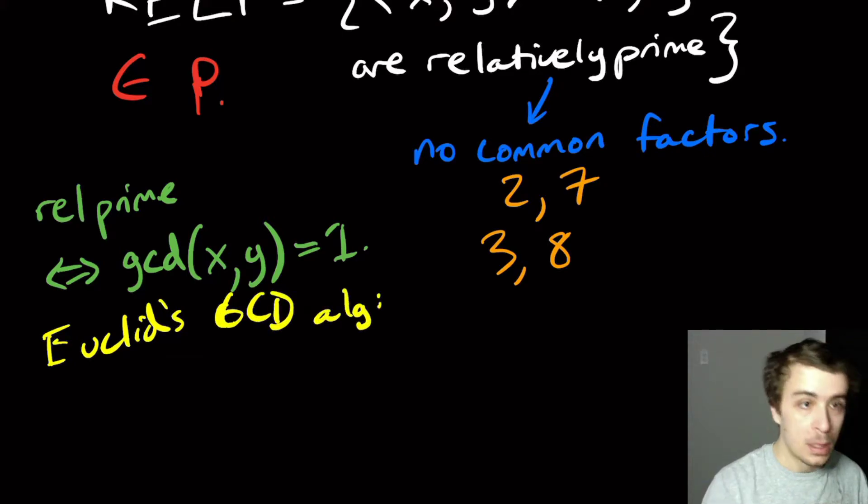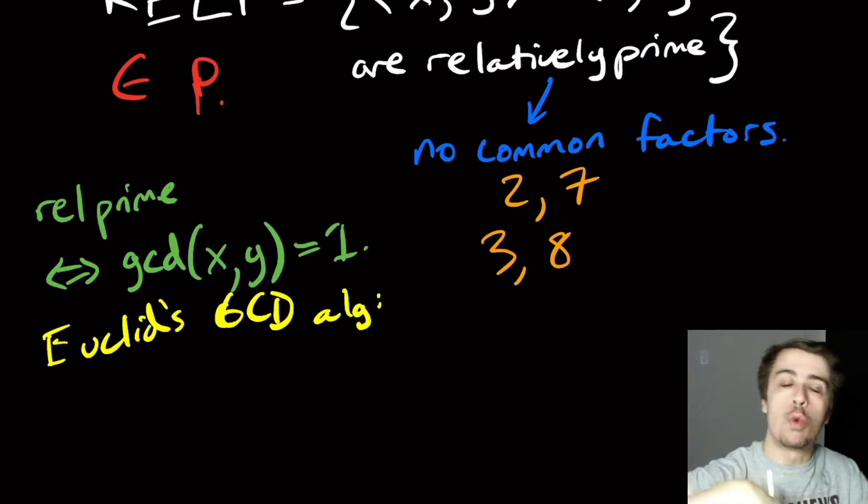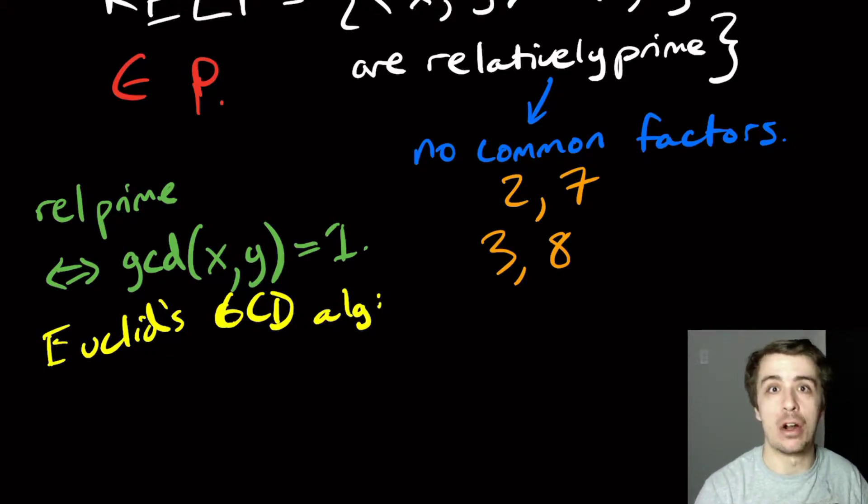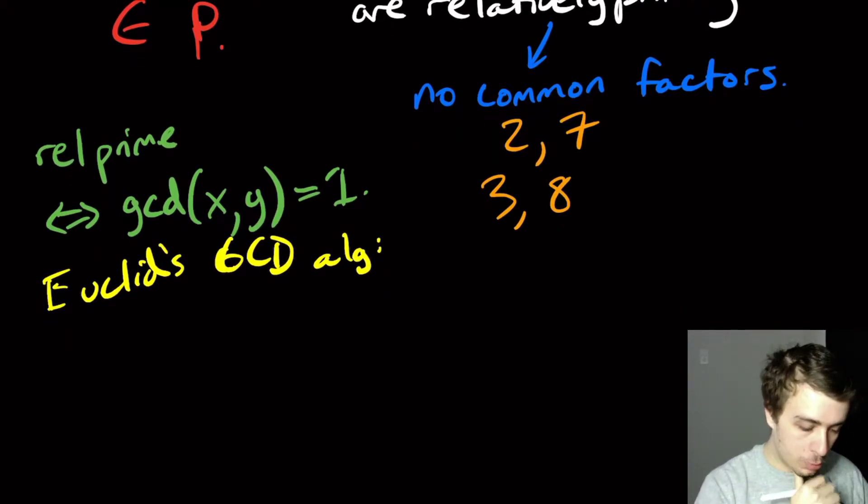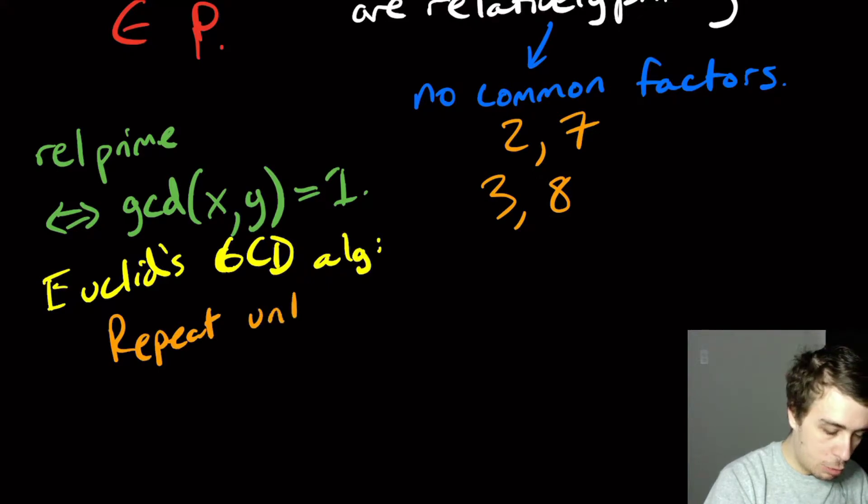So Euclid's GCD algorithm. How does that go? What you do is you basically trade places between the x and y, trying to reduce one in terms of the other one, and then swap them until either you hit 0 or you hit something that's not 0, which means that they are not relatively prime. So here's what you do. We're going to do the following. We're going to repeat until y is 0.